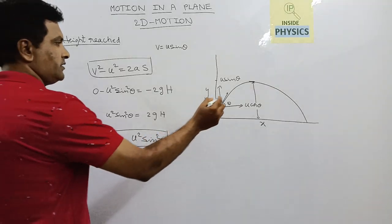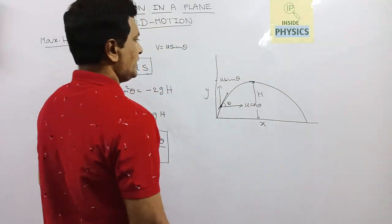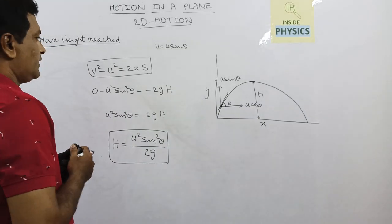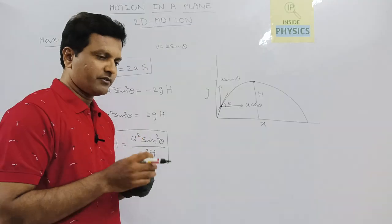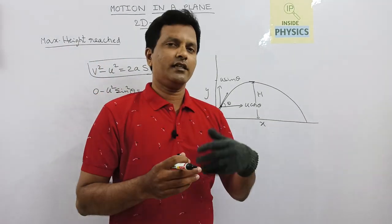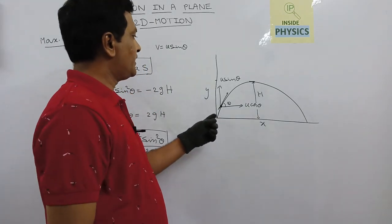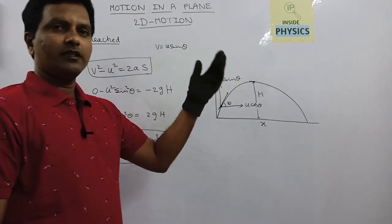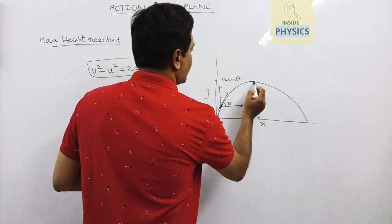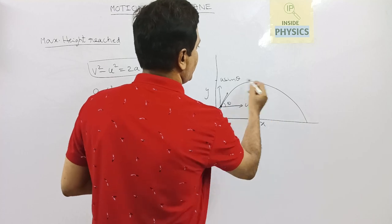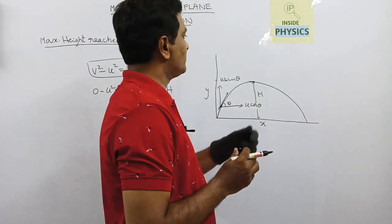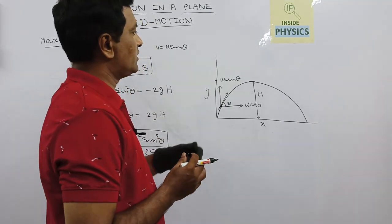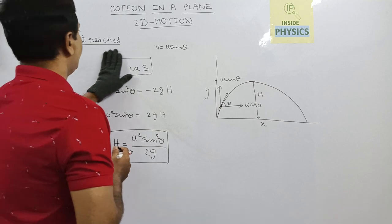This is the maximum height H reached by a projectile following an oblique trajectory. Next, what is the time of ascent? Time of ascent means the time taken from the point of projection to reach the maximum height — that is, the highest point, which is exactly at the middle of the path.